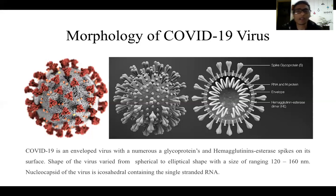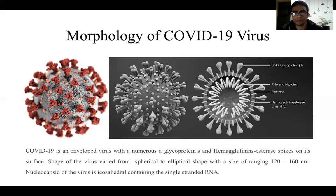COVID-19, SARS, and MERS are found naturally within animals such as bats, snakes, and penguins, and are transmitted from animals to human beings, causing infections. Therefore, the infection caused by the COVID-19 virus is also known as a zoonotic disease.